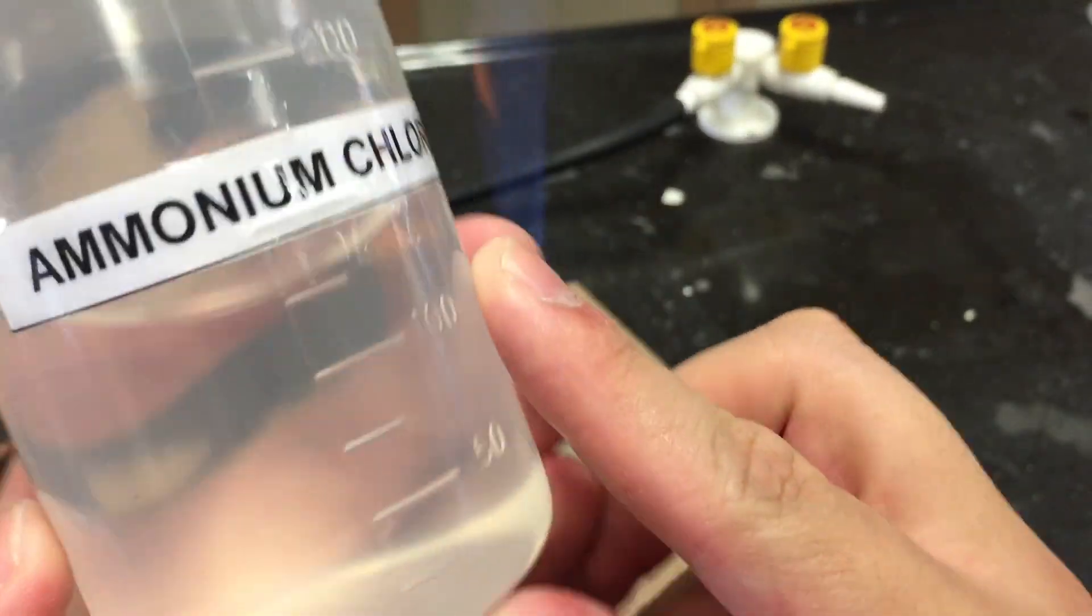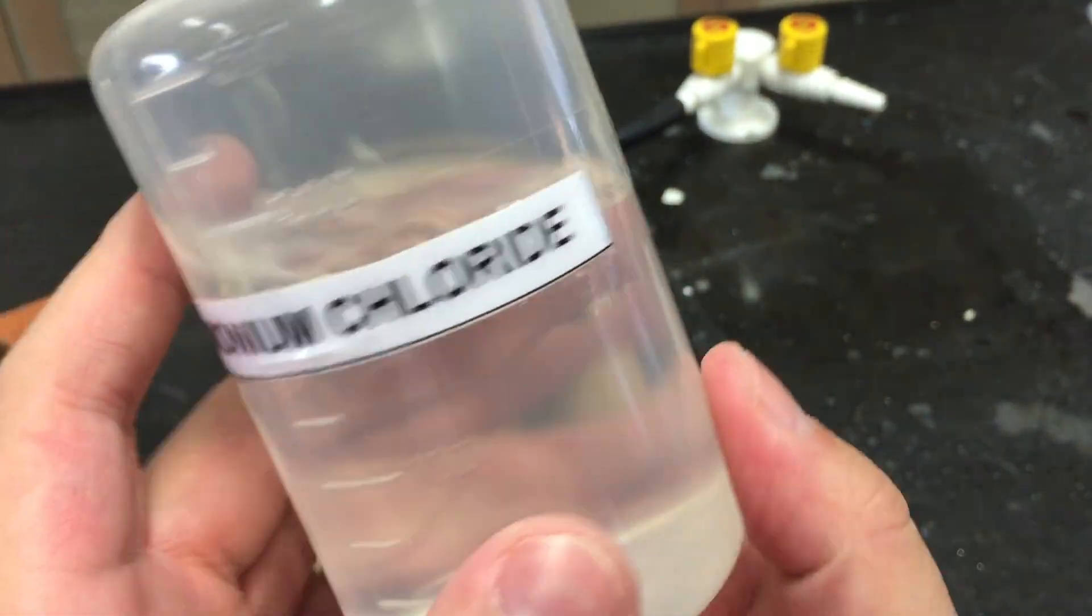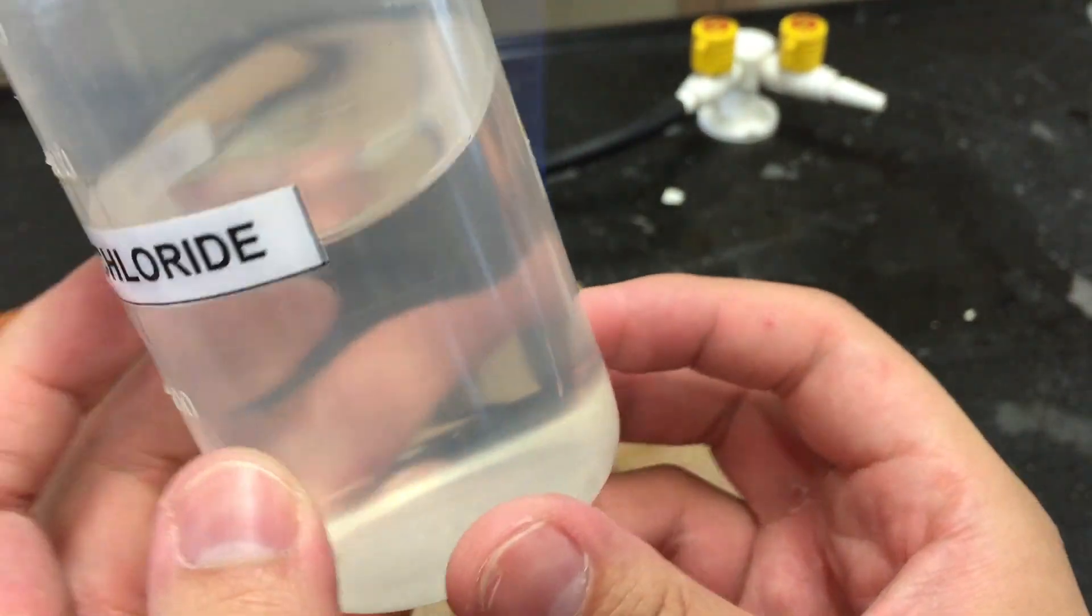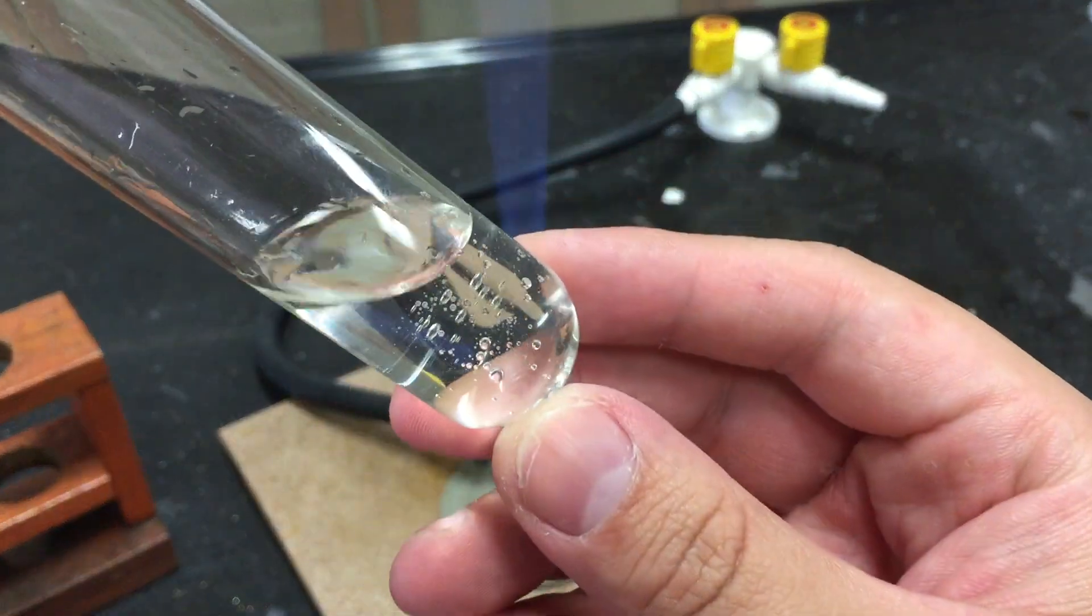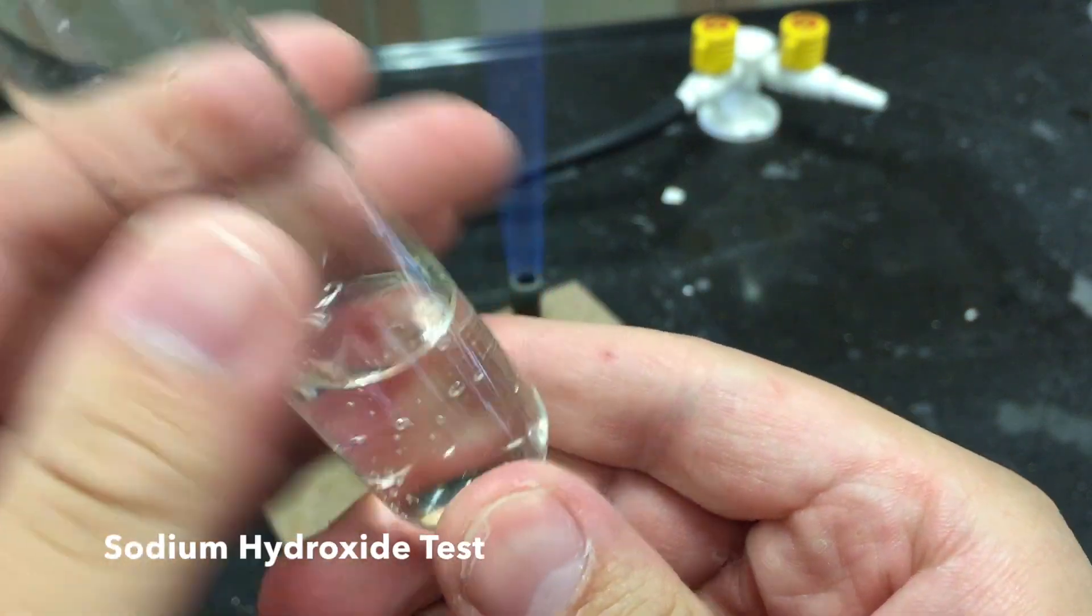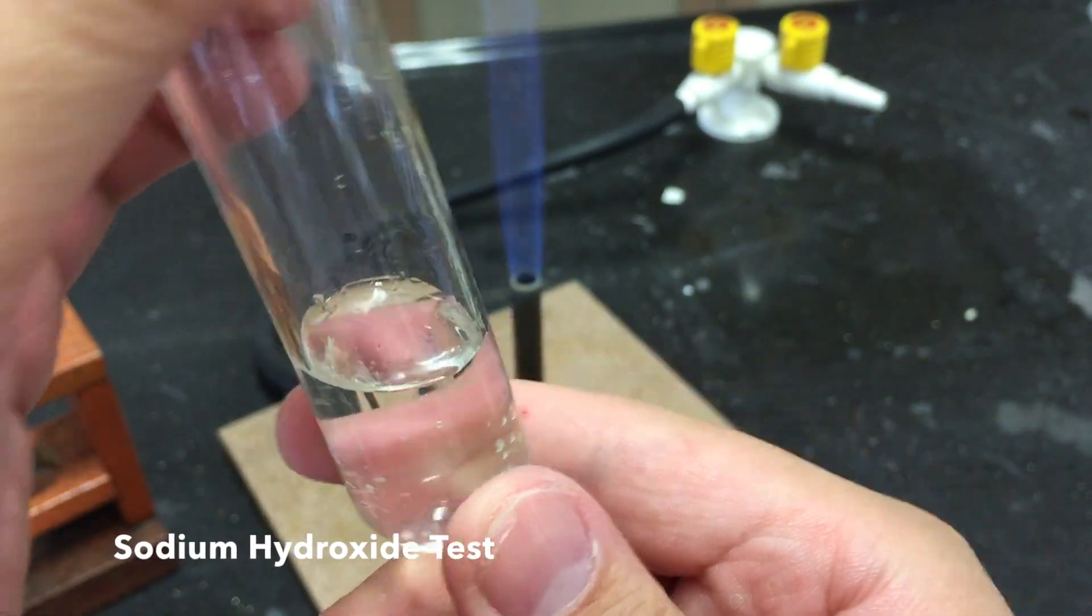Solutions containing ammonium ions are usually colourless. To test for the presence of ammonium ions, we may employ the sodium hydroxide test.